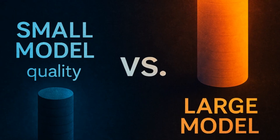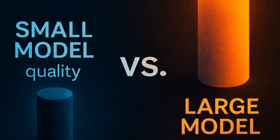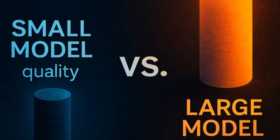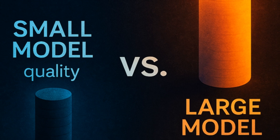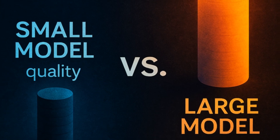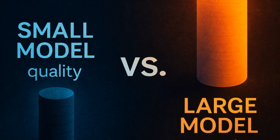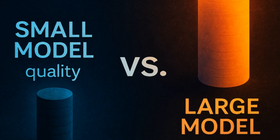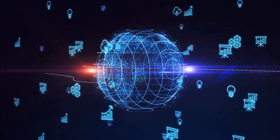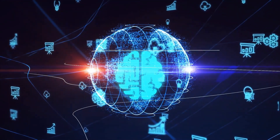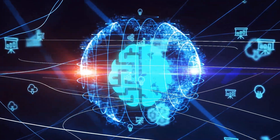But here's the twist: more isn't always better. Sometimes a smaller model with fewer parameters can outperform a larger one, especially when trained on cleaner data or optimized for a specific task. So when you hear 'this model has 70 billion parameters,' remember — that's a measure of its capacity to learn patterns, but not a guarantee of quality.